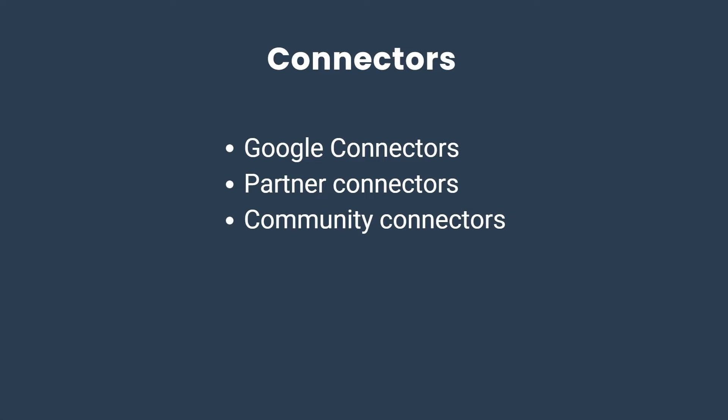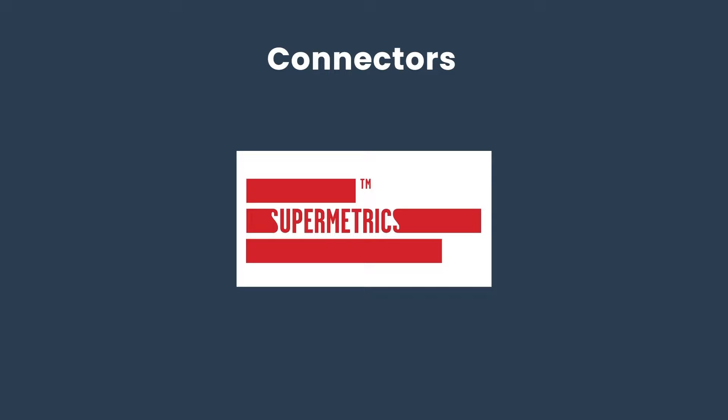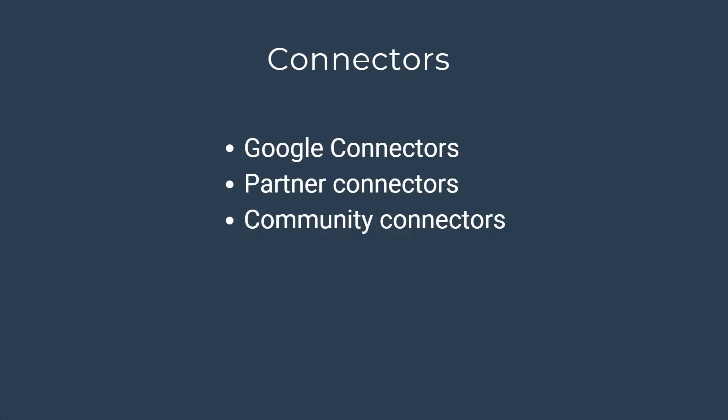Partner connectors are paid and offer additional capabilities. Examples of well-known partner connectors are from Supermetrics — their connectors can help pull and format data from various sources like Facebook Ads, Twitter Ads, Google Ads, and Google Analytics, then have them all in one place like Google Sheets, which can then be used as a data source for LukaStudio. Community connectors belong to the LukaStudio community program and can access various platforms. For this tutorial, we'll cover adding data from Google Sheets and Google Analytics 4.